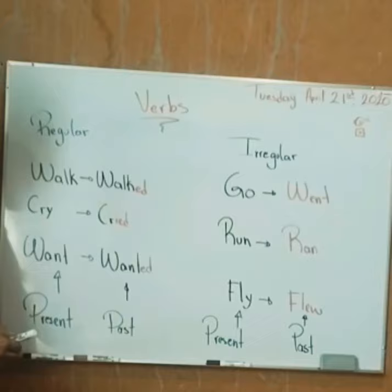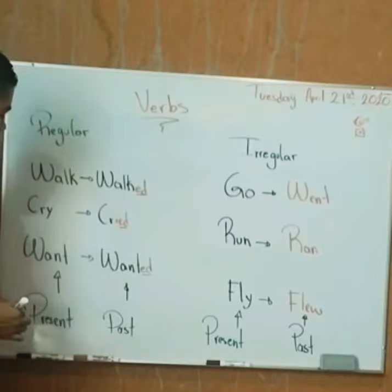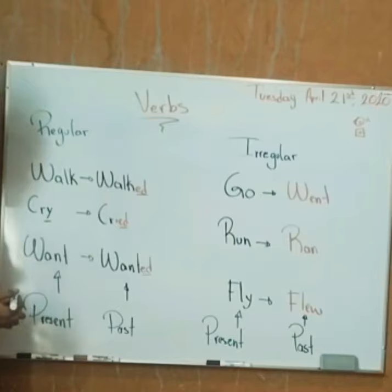As you can see, it's all based on the termination. Here there are some exceptions. For example, here the verb ends in 'Y', so I'm going to eliminate the 'Y' and add 'I' instead.